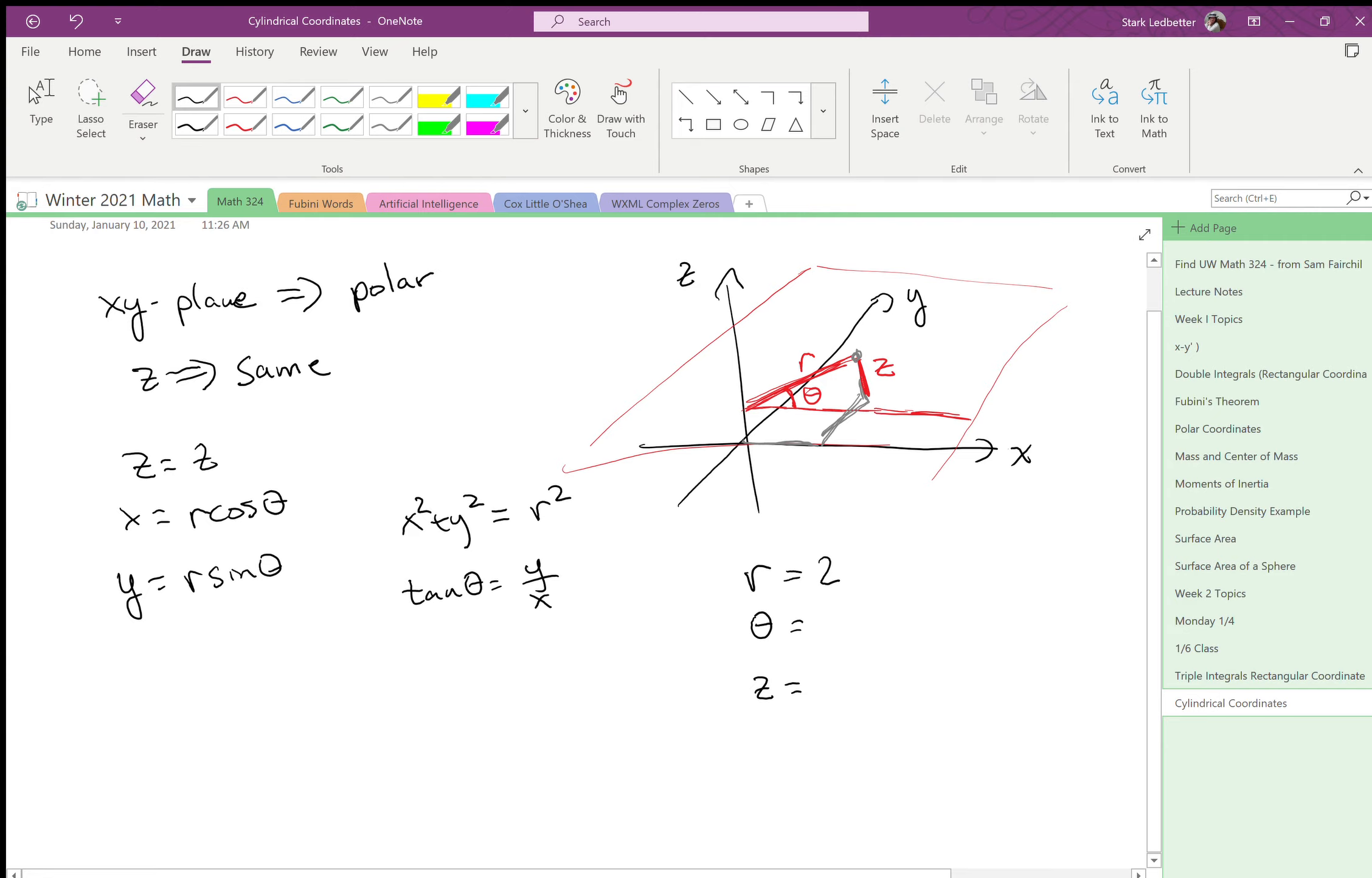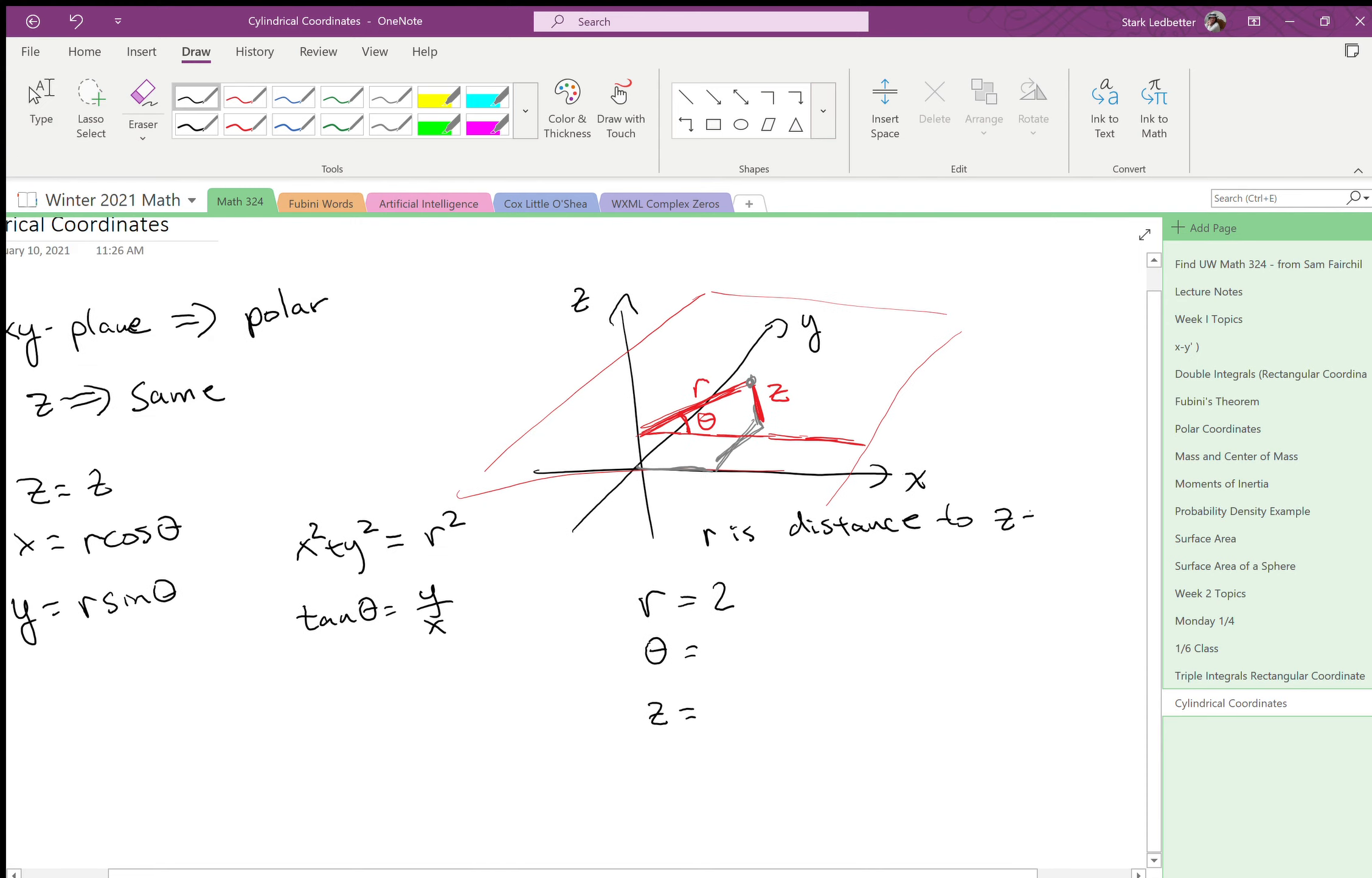In polar coordinates it was a circle, but now r, we can even think about r as distance to z axis to think about what that is. Now we're in three dimensions, and basically it's polar, but we're letting z be whatever we want, rather than just zero.